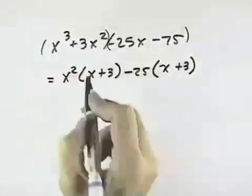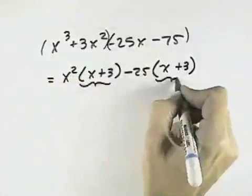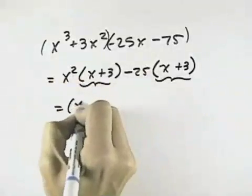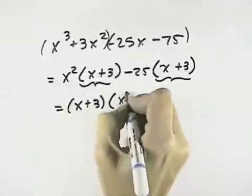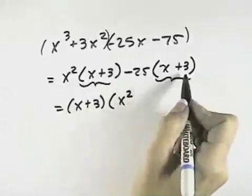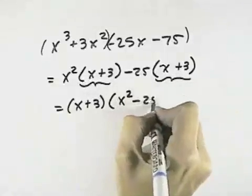I can see that grouping is going to work because I now have the common factor of x plus 3. So if I divide out the x plus 3 from the first term, I'm left with x squared. If I divide out the x plus 3 from the second term, I'm left with minus 25.